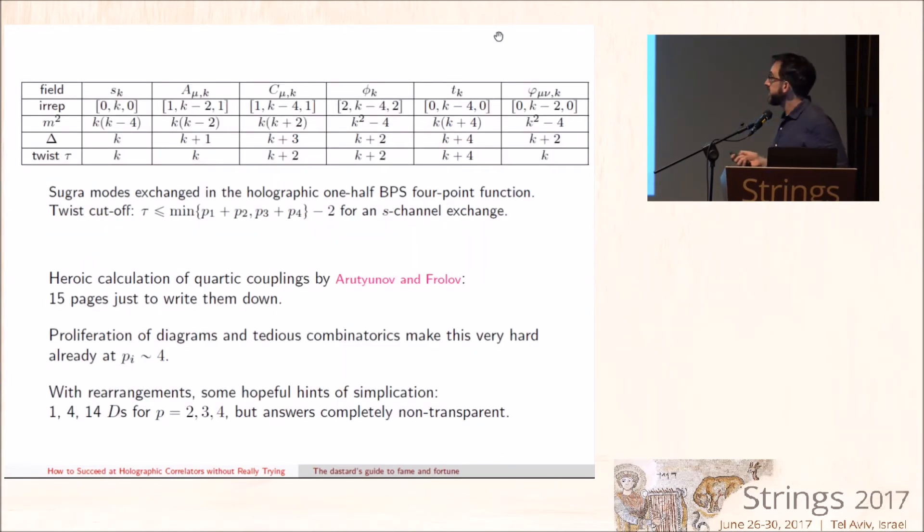Now, the really hard part is combining these diagrams, taking into account the combinatorics, which become increasingly complicated as the weights of these external states increase, and weighting the diagrams with the appropriate couplings. In fact, the quartic couplings take 15 pages just to write down, and after heroic efforts, people computed up to P=4, but it's hopeless to go beyond by this method.